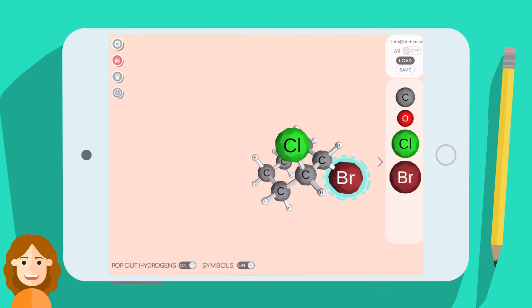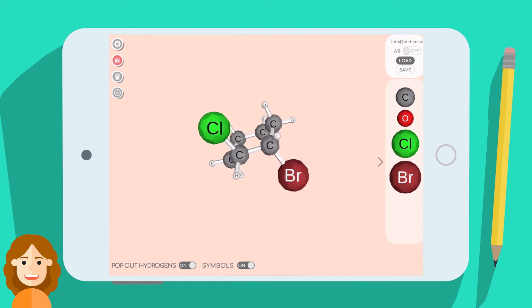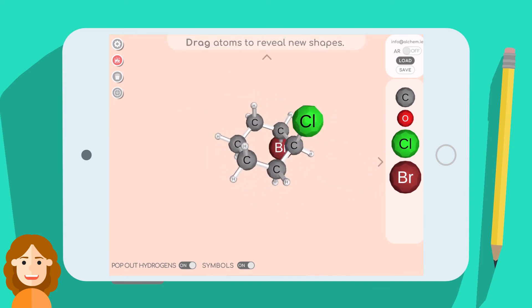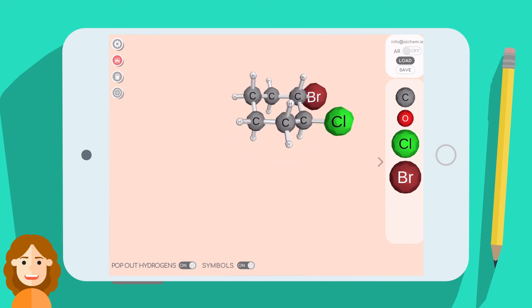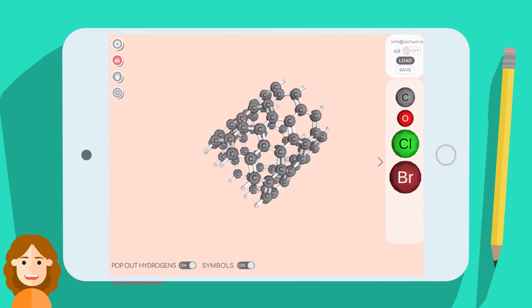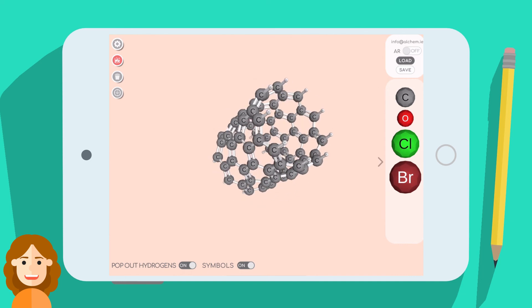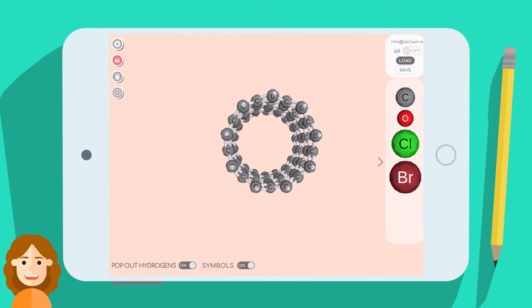You can invert the chair by adjusting the carbons. As the chair flips, notice how the chlorine stays up and the bromine stays down, but they switch between axial and equatorial. You can also make more complicated rings in Modeler, including nanotubes and buckyballs.